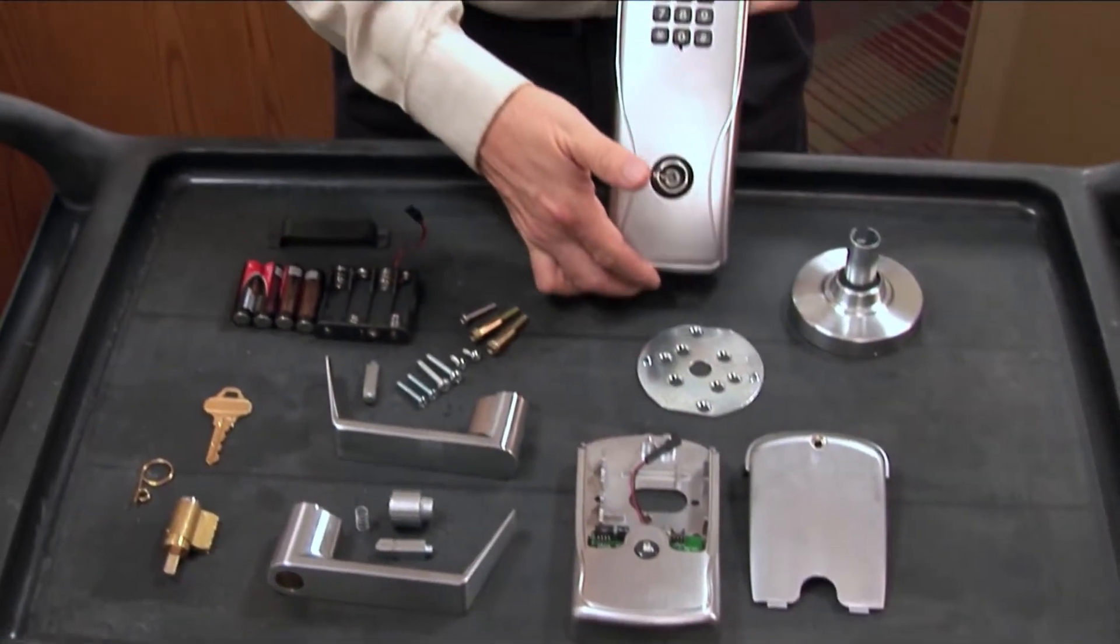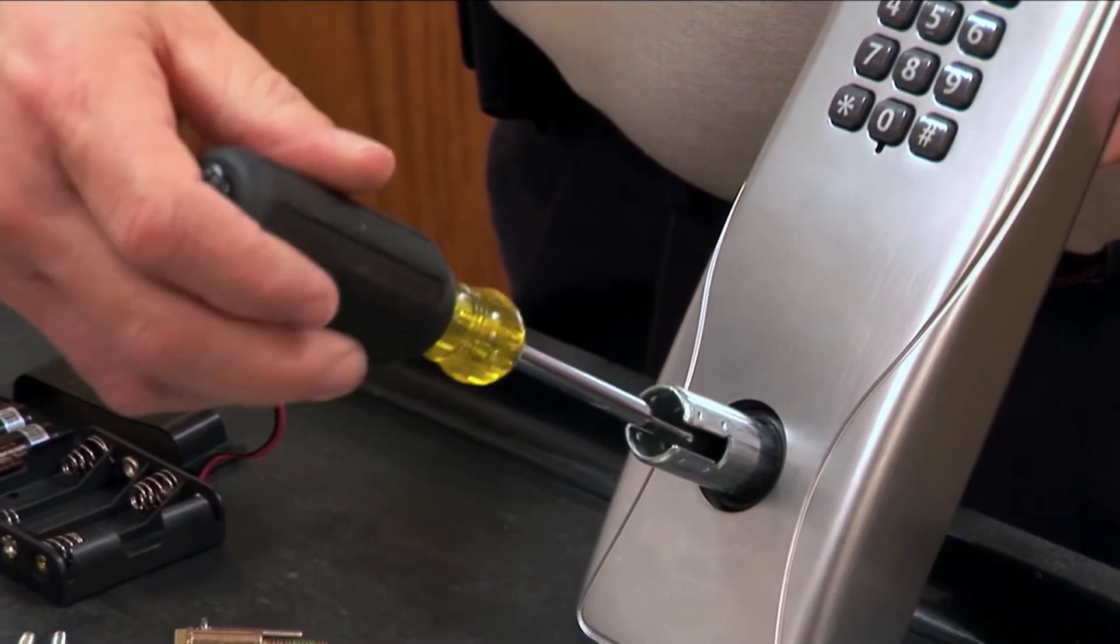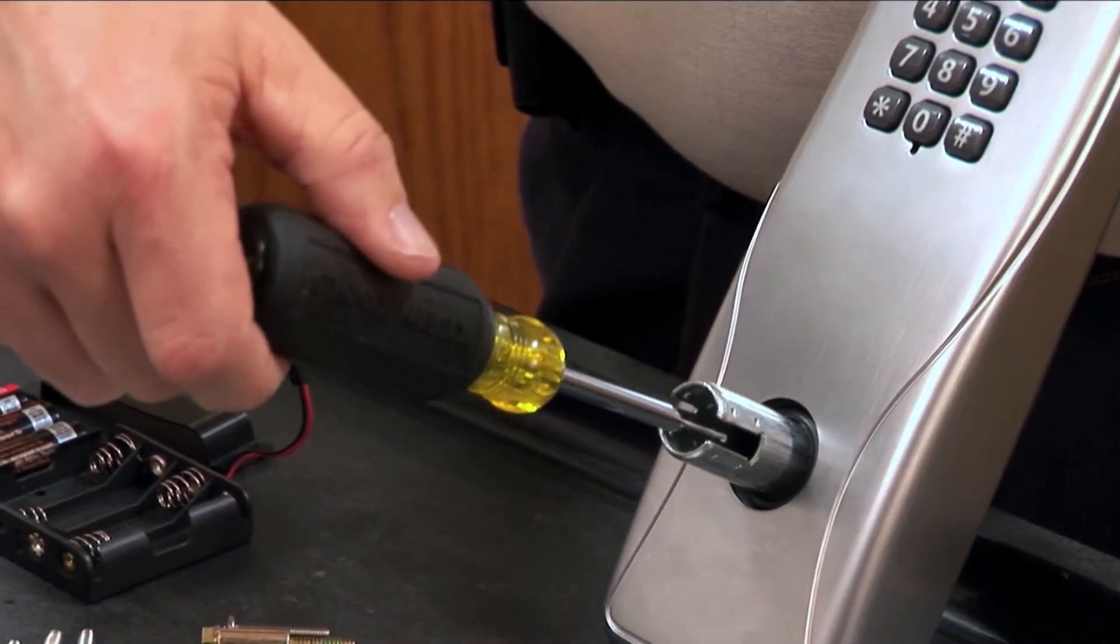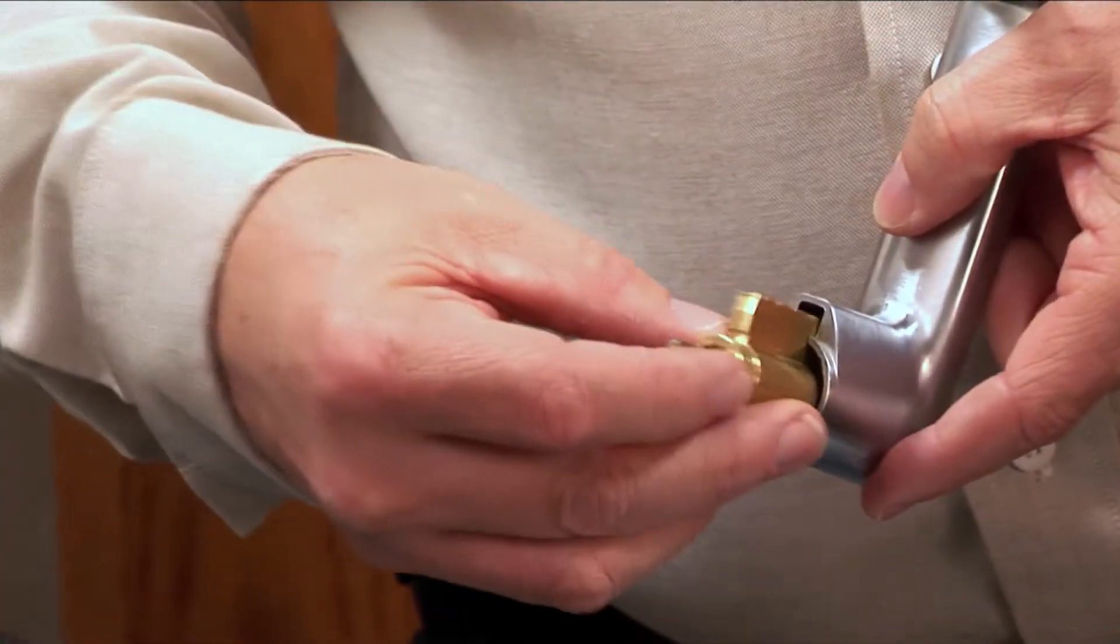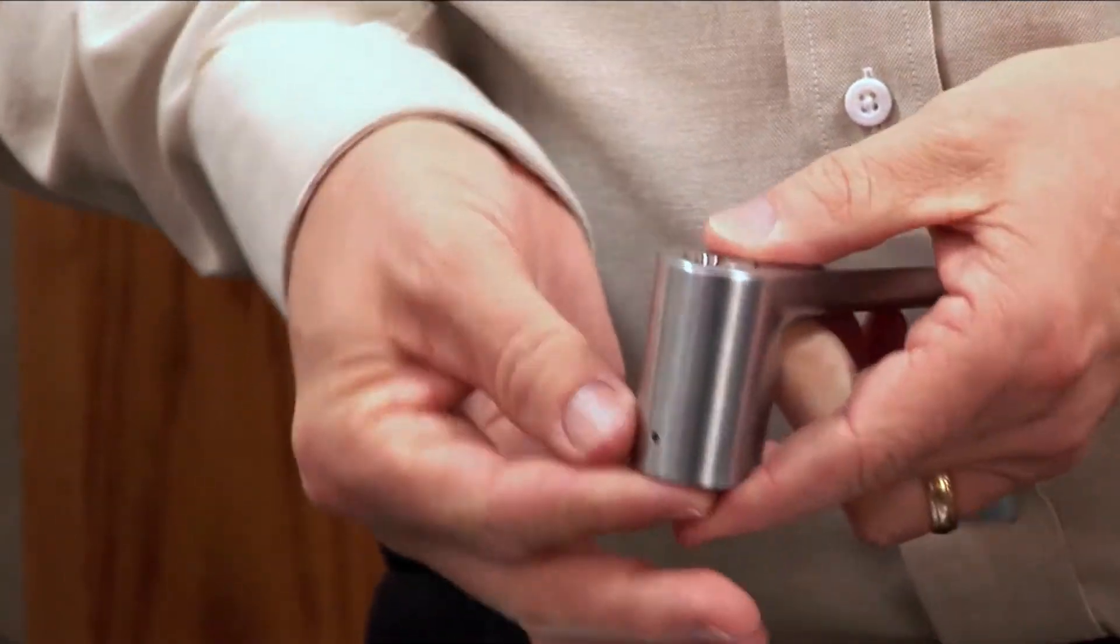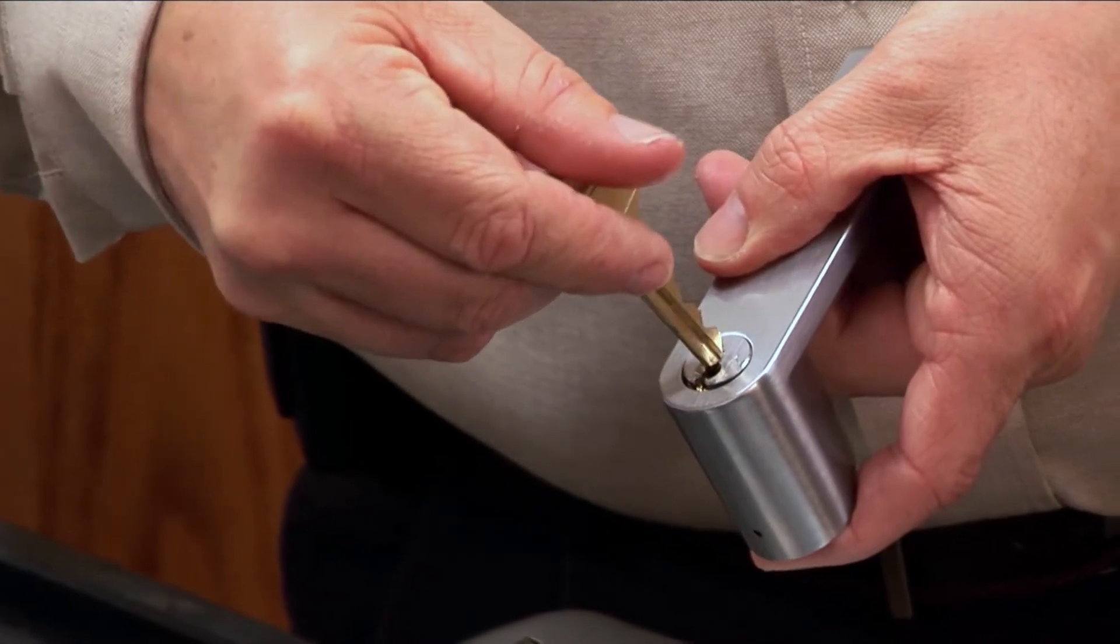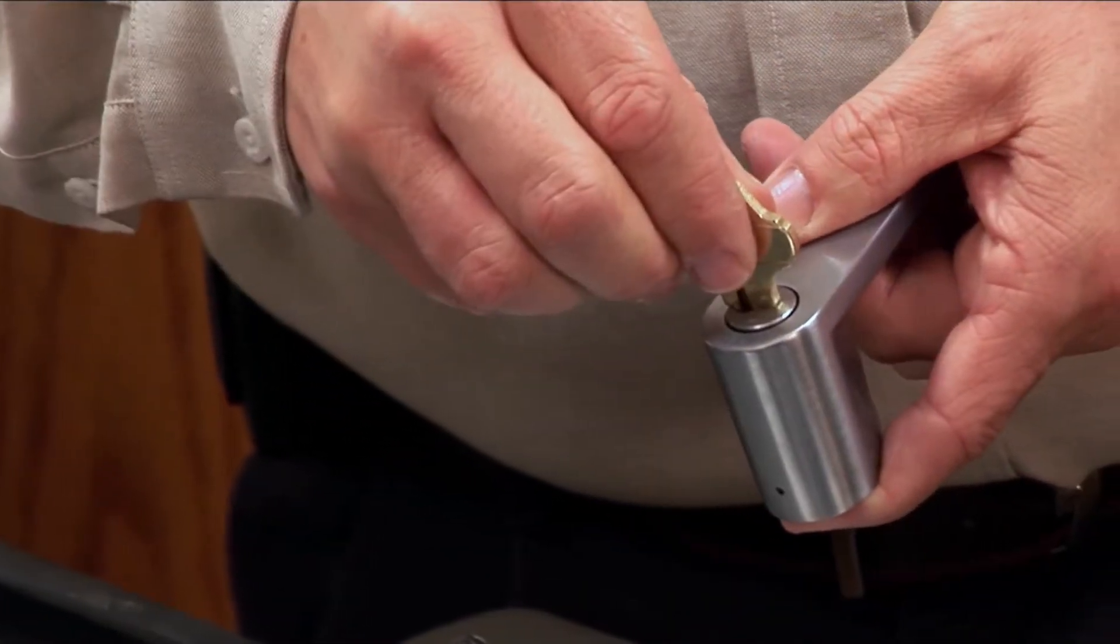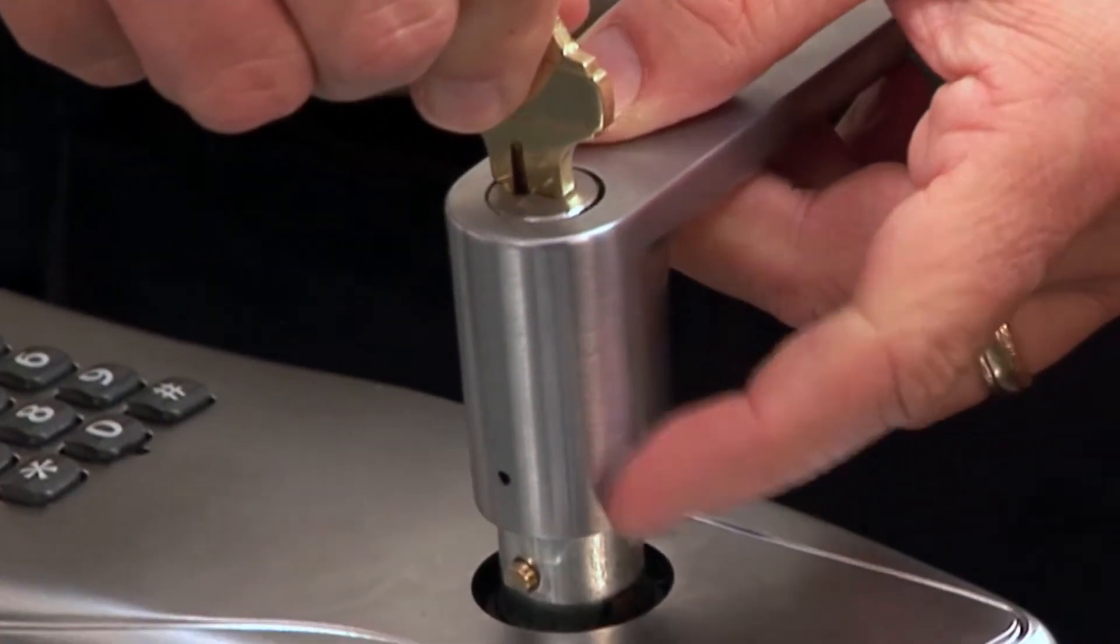Install the lever and cylinder onto the outside assembly. Insert a Phillips screwdriver into the cam of the outside assembly and rotate it clockwise until it stops. Place the cylinder into the lever and while holding the cylinder in place, insert the key.